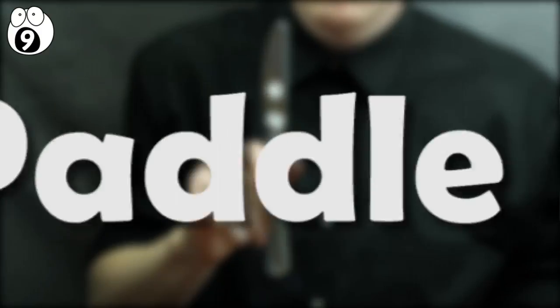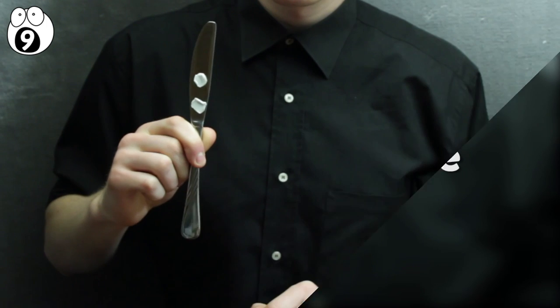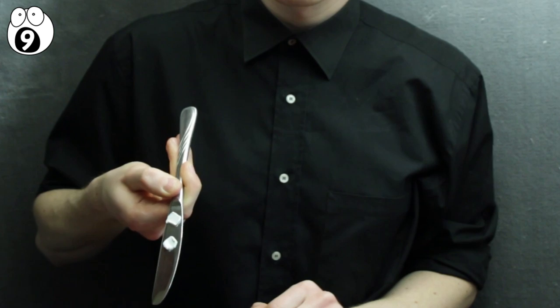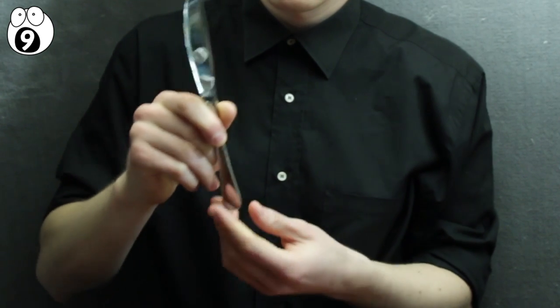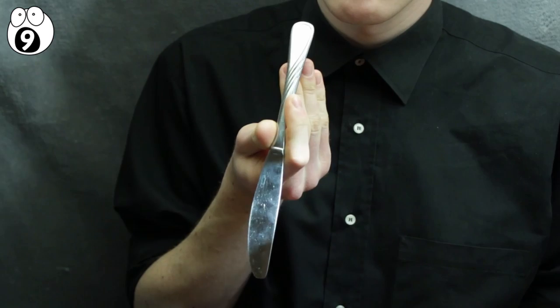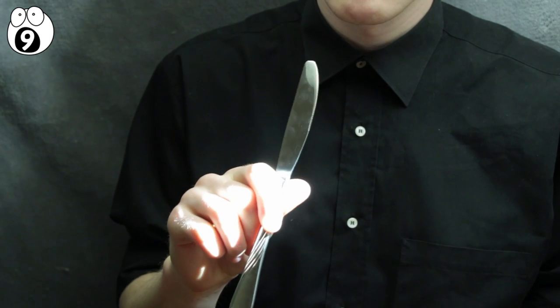Number 9, the paddle move. This trick is so versatile. It's a magician's favorite. Look at this knife. It's dirty. If only there was an easy way to clean it. Well, there is. A little flick, bang, and the dirt is gone. Check both sides and you can see it's now nice and clean.